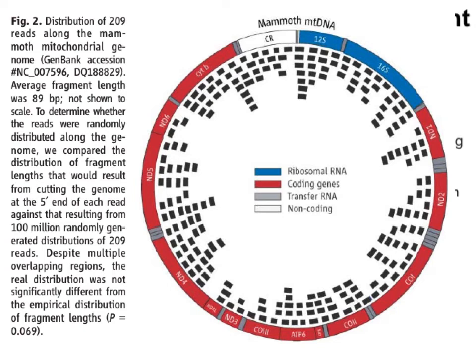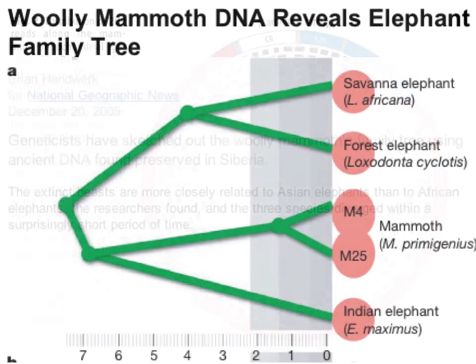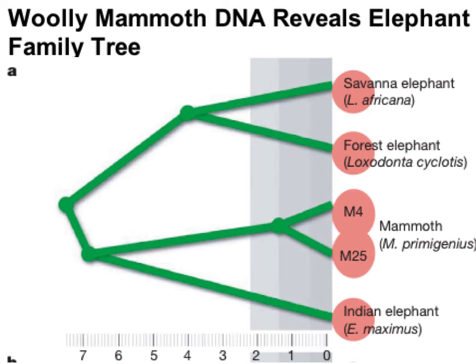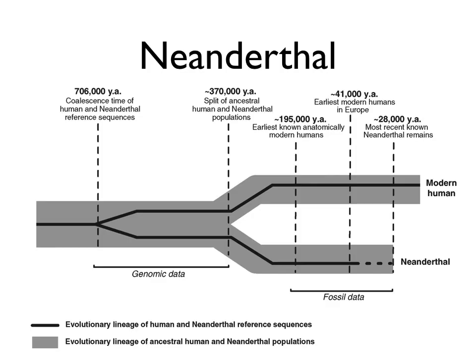Each of these little black stretches represents an individual sequence from the woolly mammoth mitochondria. There are lots of overlapping bars, and that overlap is necessary for assembling the complete picture. Around the seven o'clock position there's a gap where researchers couldn't get good sequence, but for most of the genome they obtained sequences covering almost the entirety of the mammoth mitochondria. Comparing this DNA to living elephants, they demonstrated that the mammoth is most closely related to the Indian elephant, a different species from African elephants.